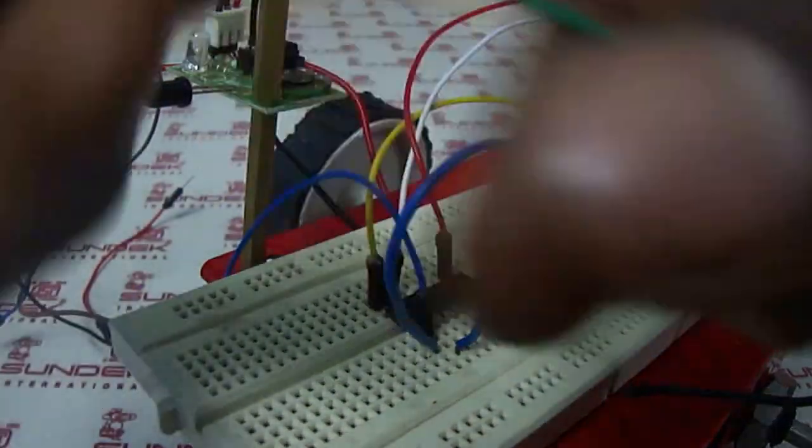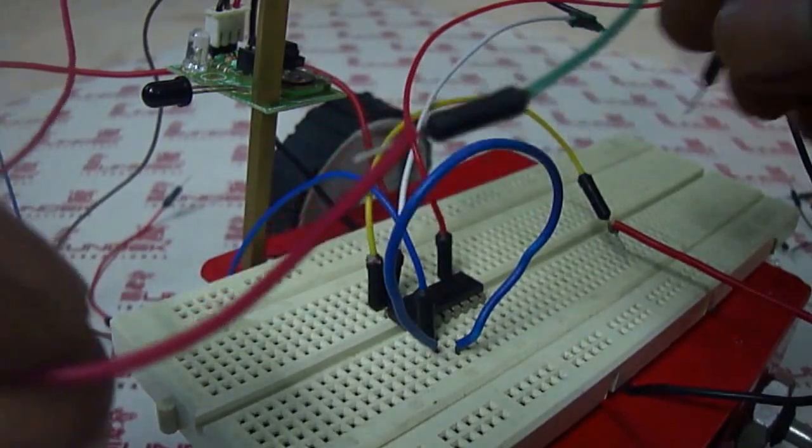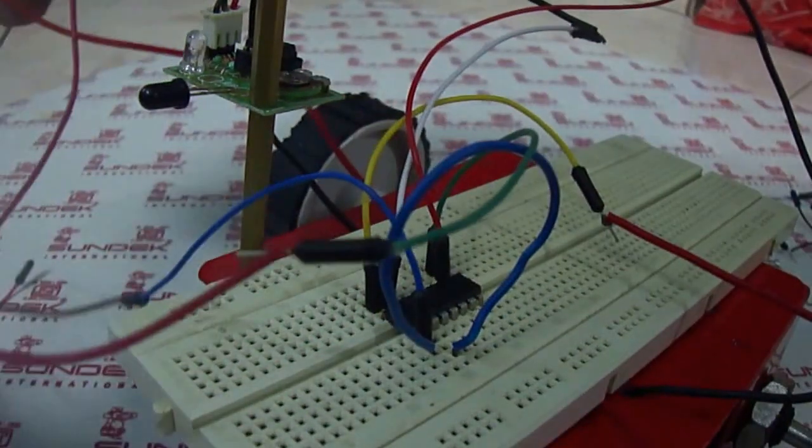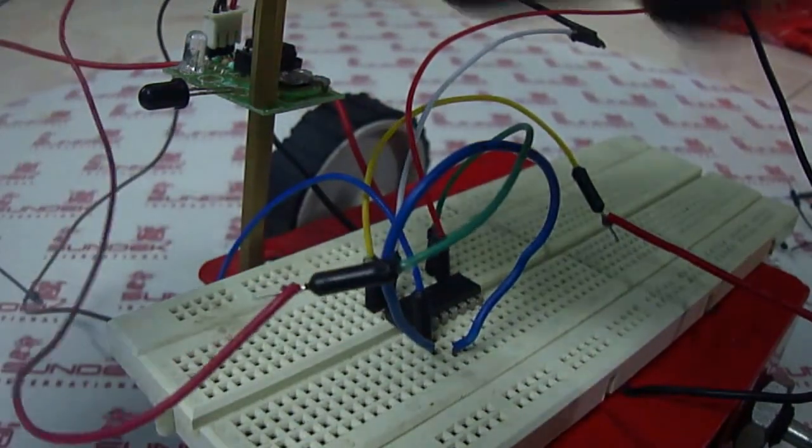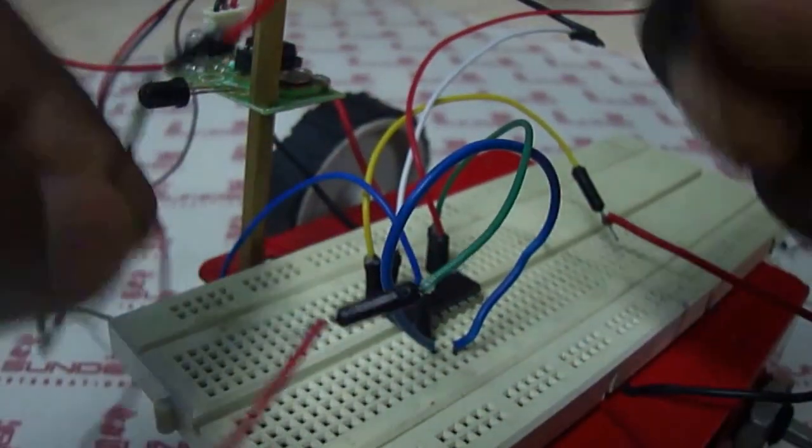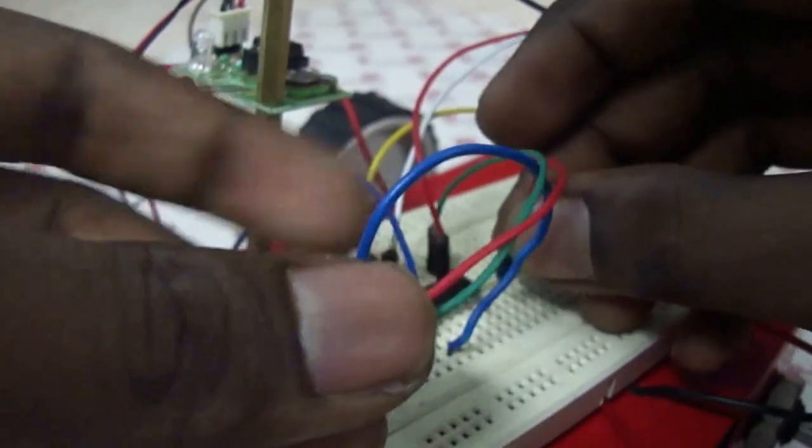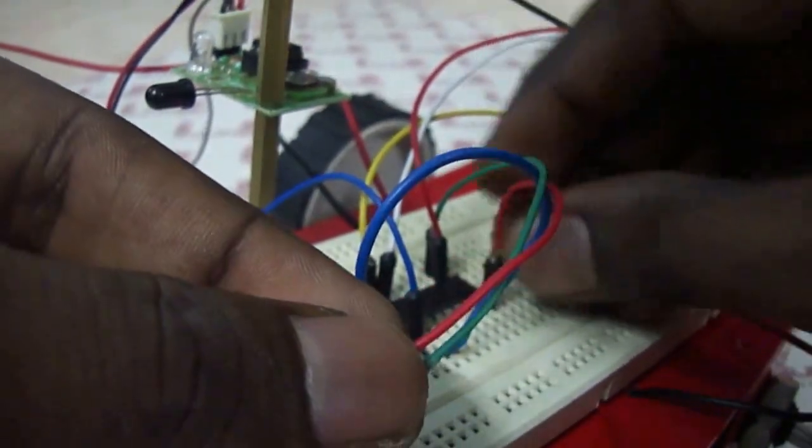And this is the sensor's 5V input. And this is ground, the sensor's ground. I am connecting to the ground of the IC.